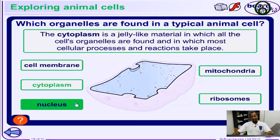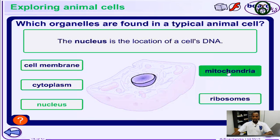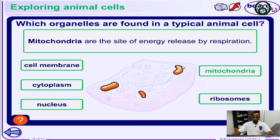Now let's take a look at the nucleus. The nucleus of a cell in an animal is the location of the cell's DNA — it contains the DNA. Then what about the mitochondria? The mitochondria is the site of energy release by respiration.